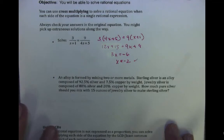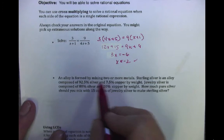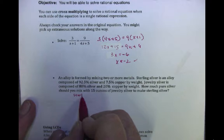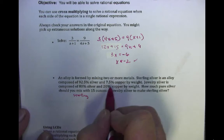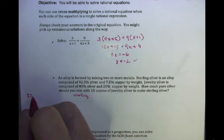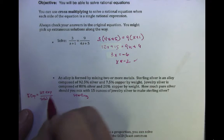Let's go down here and look at this word problem. You're going to end up cross-multiplying here as well. It says an alloy is formed by mixing two or more metals. Sterling silver is an alloy composed of 93% silver and 7.5% copper by weight. So the percent copper equals the total weight of the copper over the total weight of the mixture.